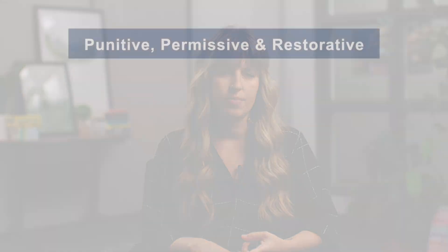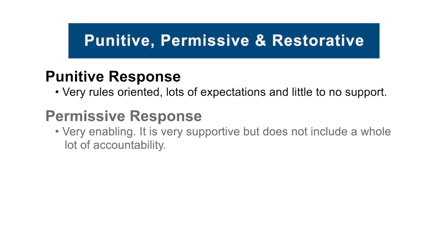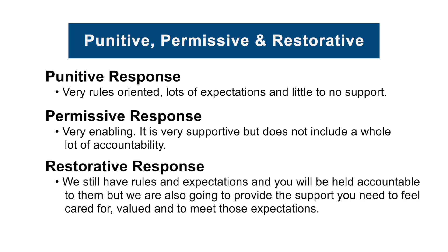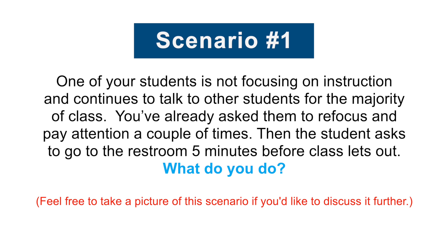Now, let's put this framing into context. In just a moment, you will pause the video and gather into groups of about three to four. You'll take five minutes to choose at least one classroom scenario and discuss: what would a punitive response look like, what would a permissive response look like, and what would a restorative response look like? Remember: punitive is rules-oriented with little to no support; permissive is very supportive but lacks accountability; restorative means high expectations with the support needed to feel cared for, valued, and to meet those expectations.